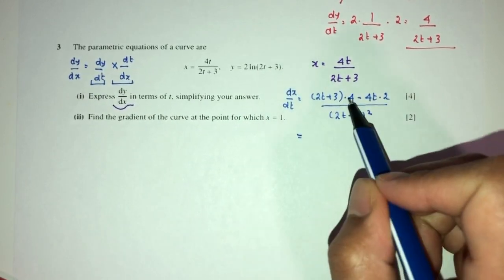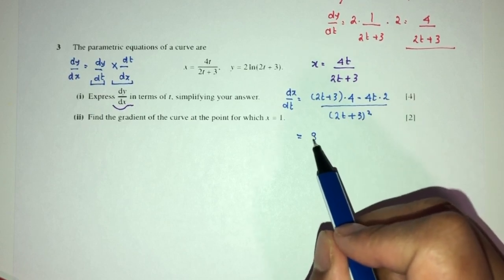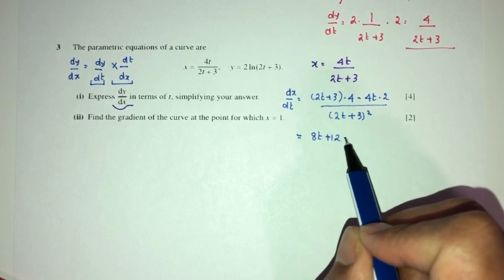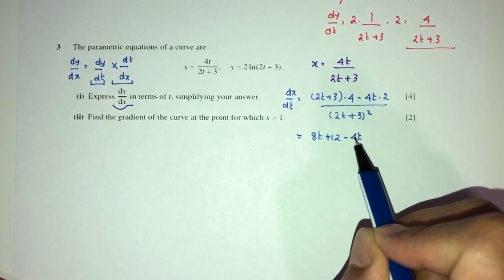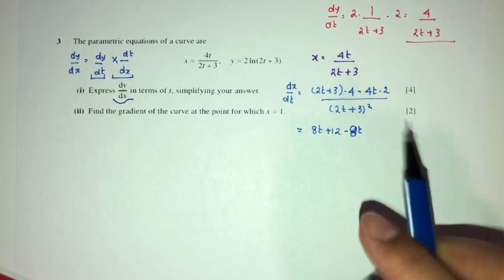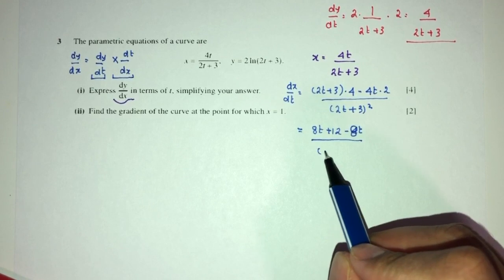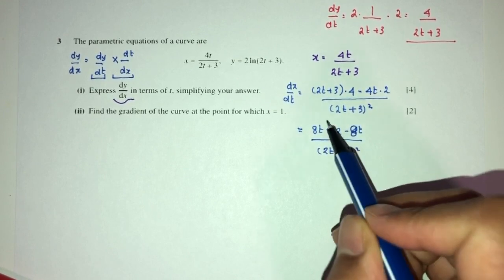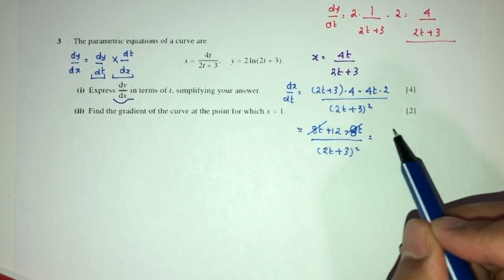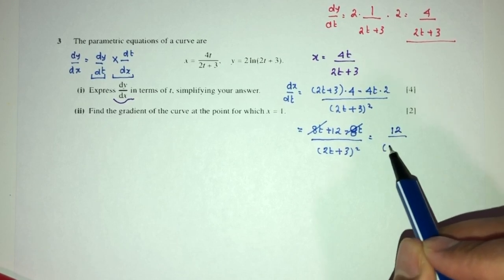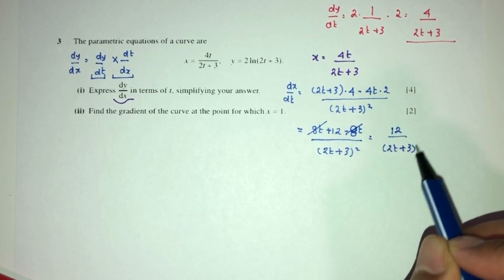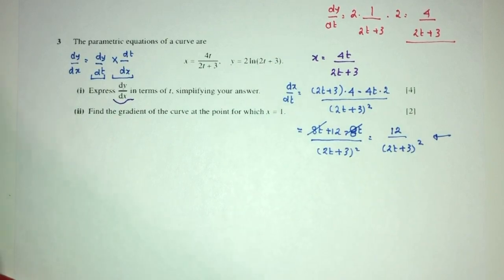Simplify. You will have 8t + 12 minus 4t times 2, which is 8. So 2 times 4 is 8. Now obviously these two will cancel out. You have 12 over the value of (2t + 3) squared.